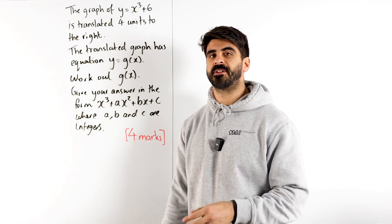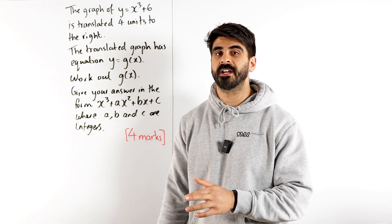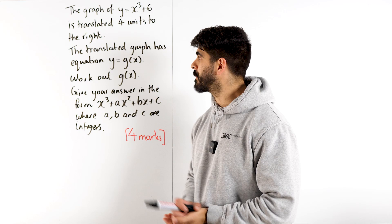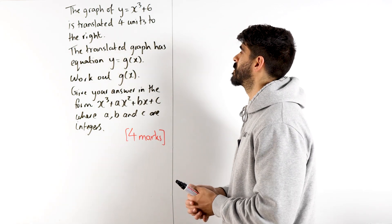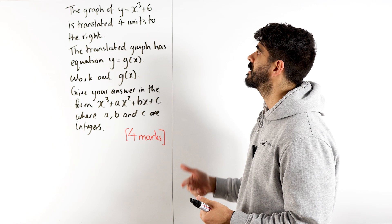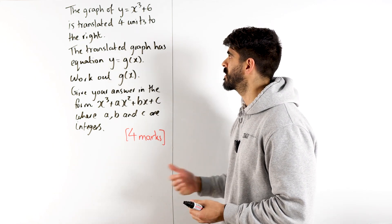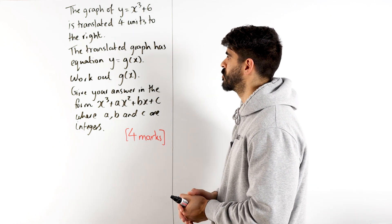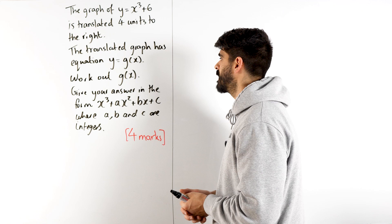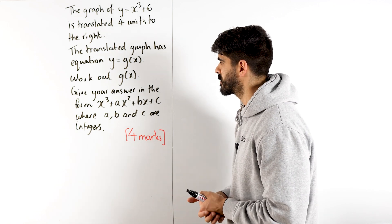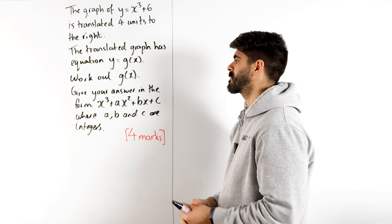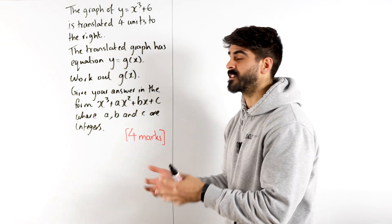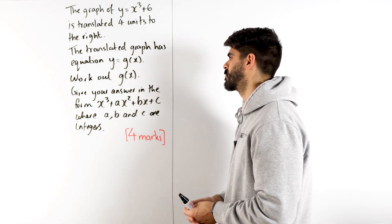Functions and transformations. How do they work? Let me show you the general rules and how we can apply them to this tougher question where it says the graph of y equals x cubed plus 6 is translated four units to the right. The translated graph has equation y equals g of x. Work out g of x. Give your answer in the form x cubed plus ax squared plus bx plus c. So you're going to be doing some expanding brackets here as well.